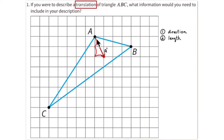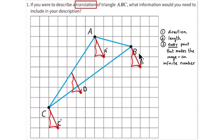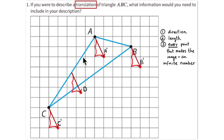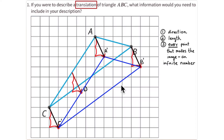That direction and length is all the information you need. You can count down two and over one to locate the corresponding points B prime, C prime, and D prime. Every point that makes up the image is moved the same length and in the same direction — there are an infinite number of points on this image and every single one of them moves down two and over one.